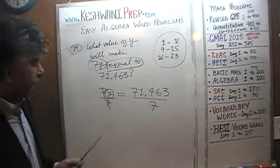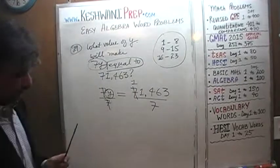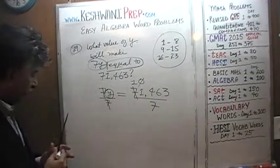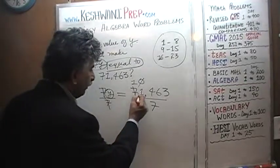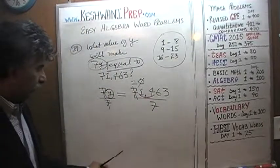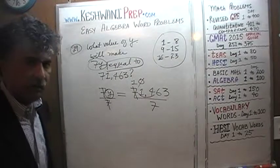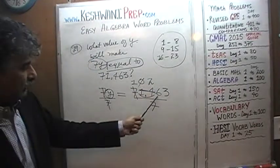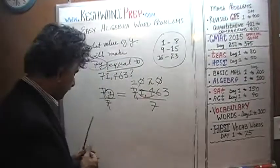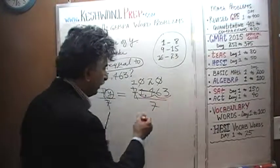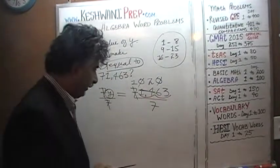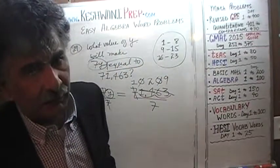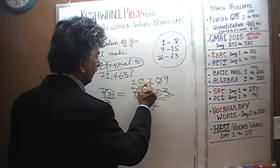How many 7s does 7 have? 7 has one 7. How many 7s does 1 have? 1 has no 7s — so that 1 goes and joins the 4 and becomes 14, and 14 has two 7s. How many 7s does 6 have? 6 has no 7s — so 6 goes and joins the 3 and becomes 63, and 63 has nine 7s because 9 times 7 is 63. The answer is Y equals 10,209.